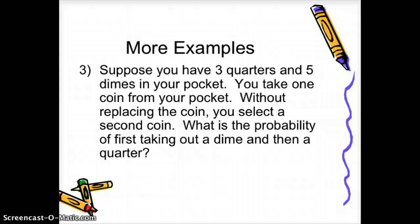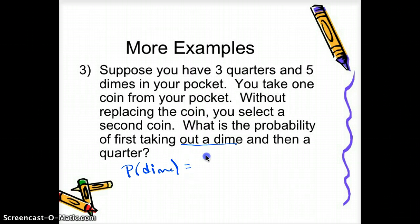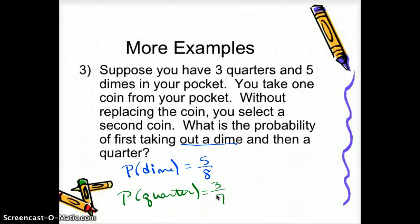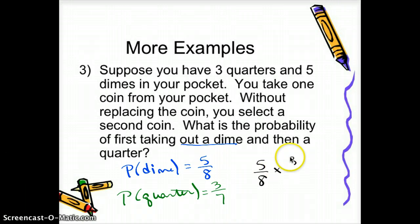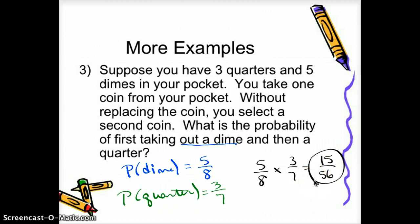Same setup as before, but this time you do not replace the coin. You have three quarters and five dimes; you take a coin out and do not put it back before taking a second coin. The probability of a dime is still five out of eight. But for the quarter, you've pulled a dime out, so you only have four dimes and seven coins total — giving a probability of three-sevenths. Multiplying gives 15 out of 56.